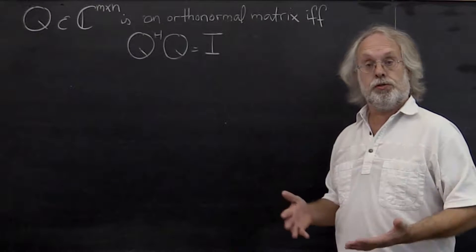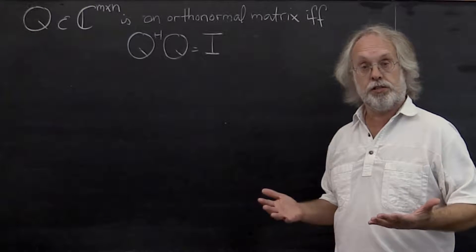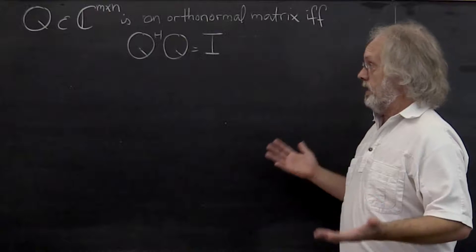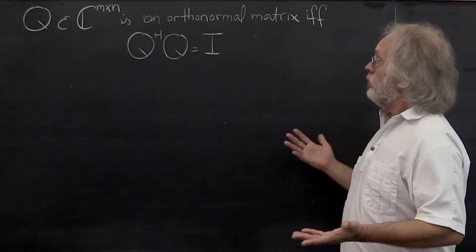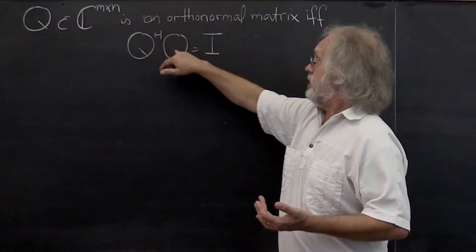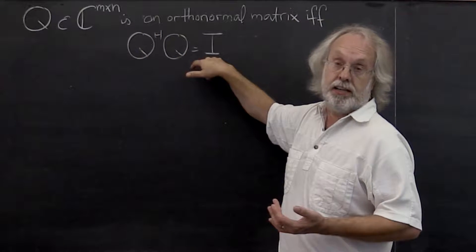In the last unit, we were introduced to a very special kind of matrix known as an orthonormal matrix. And an m by n matrix is orthonormal if and only if Q Hermitian transpose times Q is equal to the identity.